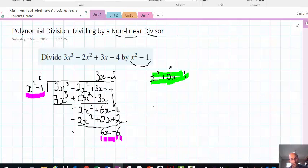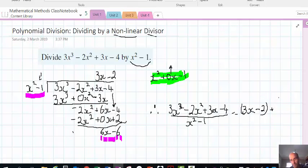So that's basically our answer. So we've got 3x cubed take 2x squared plus 3x minus 4 divided by the divisor, which yields the quotient 3x take 2 plus 6x minus 6 over x squared minus 1.